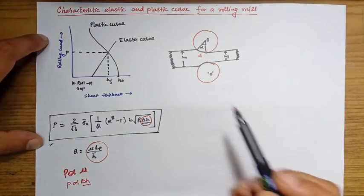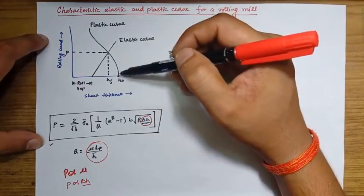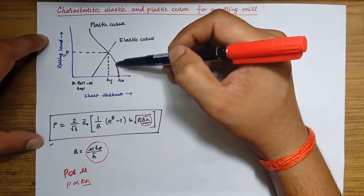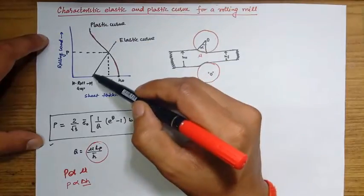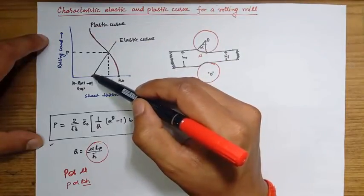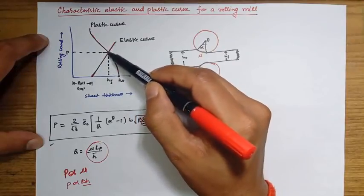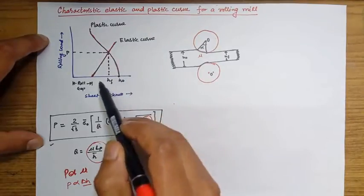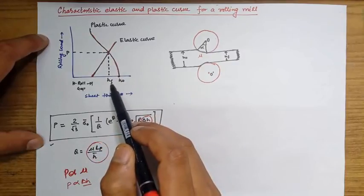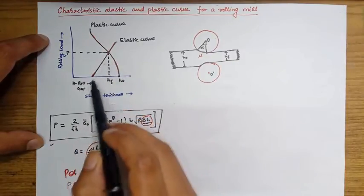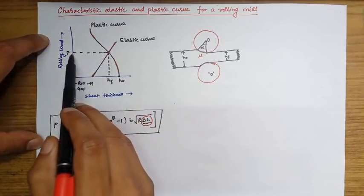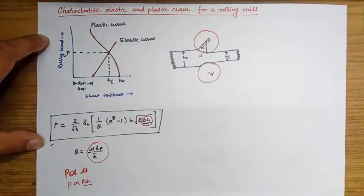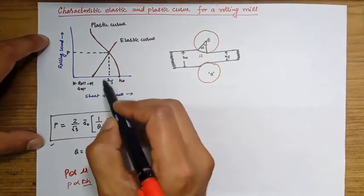To get HF, this is the plastic rolling load curve, and this is the elastic deformation curve. Whenever these two curves join at a point, and corresponding to that if you draw a vertical line to the x-axis, it gives the final thickness which we will get. The corresponding rolling load value gives you the rolling load at that roll gap or at that final thickness.